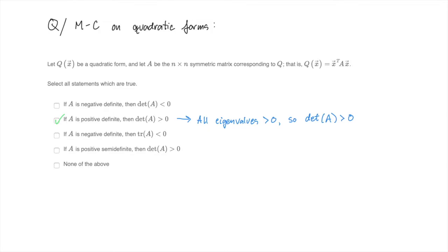Alright, let's go back to the first one. What if A is negative definite? This means that all eigenvalues of A are strictly negative numbers. Does this mean that the determinant of A is negative? It seems like it should be, but it's actually not true in general. What if there are an even number of eigenvalues? Then the determinant is the product of an even number of negative numbers, and so it's positive. For instance, what if A is just minus the identity matrix? This statement is false.